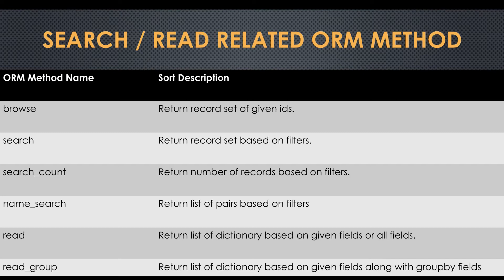The name_search method will return records based on matching display name. The read method is a low-level RPC method — if the user wants to return only specific fields and their values, this method is used. It won't return a record set; it returns a list of dictionary values. The last method is read_group — if you want to get grouped records, the read_group method will help.